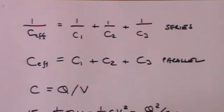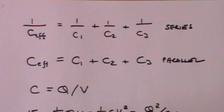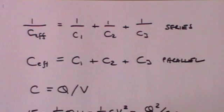Firstly, where you've got capacitors in series, the formula is that 1 over the C effective is 1 over C1 plus 1 over C2 plus 1 over C3. If capacitors are in parallel then the effective capacitance is C1 plus C2 plus C3. Remember that formulation is precisely the opposite for resistance — if resistors are in series you simply add them, and if they're in parallel you use the 1 over R1 plus 1 over R2 formulation. So for capacitors it's the other way round.